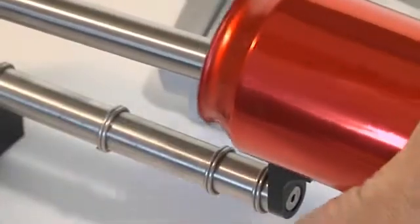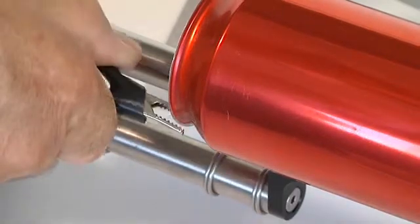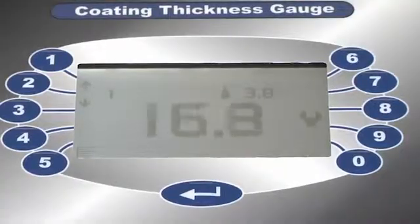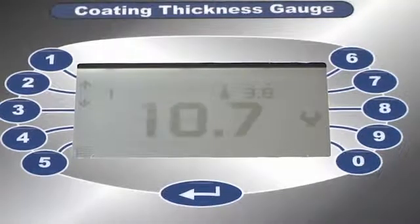Sencon's gauge has a 1% linearity across its full range and works equally well with steel or aluminium cans and sheets, provided that there's no metal content in the coating.